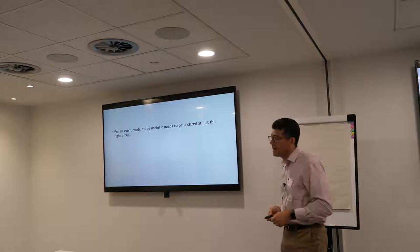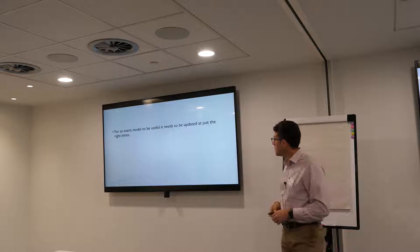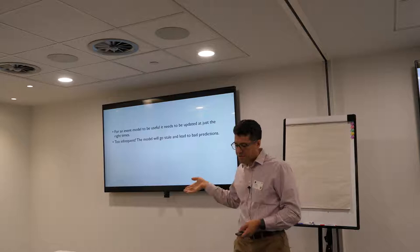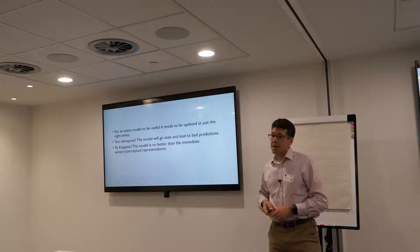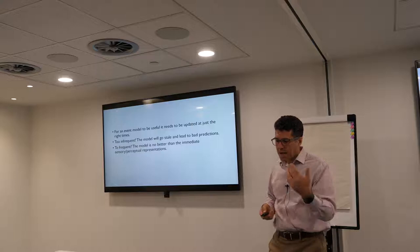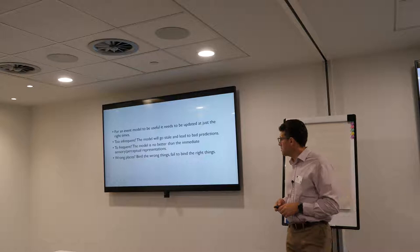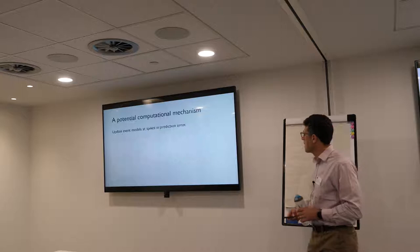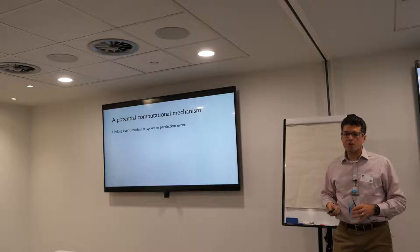This leads to a set of computational problems. If a model like this is going to be useful, it needs to be updated at just the right times. If we update too infrequently, it'll go stale and lead to bad predictions. If you've got a model of Rebecca and Zach having breakfast, after they get up and go to work you need to update that model. If you update too frequently, the model just winds up being a picture of what's right in front of you — the Gibsonians are exactly right, but that's not adding any value over just reading off the situation.